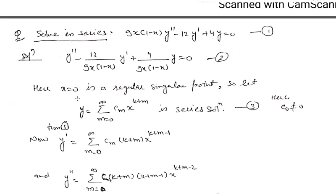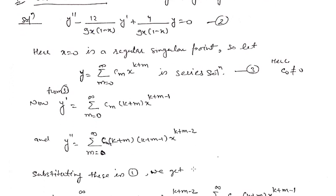According to Frobenius method, we assume y equals summation m from 0 to infinity, cm x raised to power k plus m, where c0 is non-zero. We differentiate this y with respect to x to get y prime, which is summation m from 0 to infinity, cm (k plus m) x raised to power k plus m minus 1. Further differentiating gives y double prime, which is summation m from 0 to infinity, cm (k plus m)(k plus m minus 1) x raised to power k plus m minus 2. Now we put the values of y prime and y double prime into the given equation.